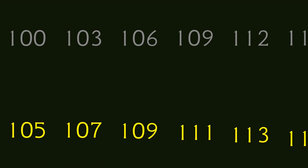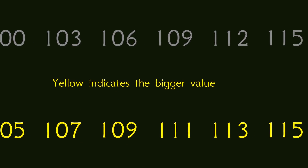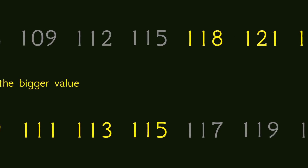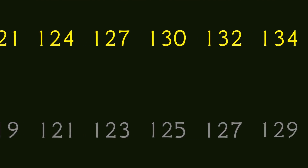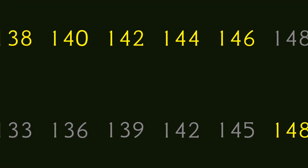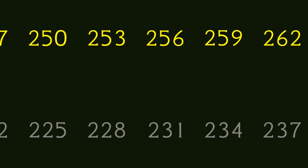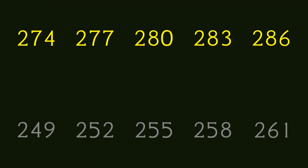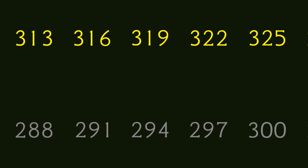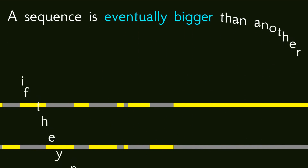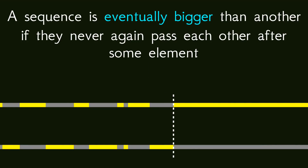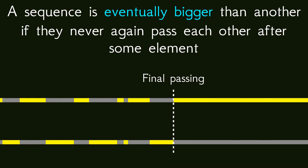It is the concept of eventuality that I want to talk about in this video. For more complicated sequences it is very possible that the two sequences pass each other back and forth with regards to which one is bigger, just over and over again. However if they reach a point where they stop passing each other, then one can say that one of the sequences is eventually bigger than the other. In other words, a sequence is eventually bigger than another if there is some element after which all elements of the first sequence are bigger than the corresponding element in the second sequence. One can think of this as the first sequence being bigger than the second sequence being the final state of the system.